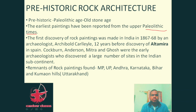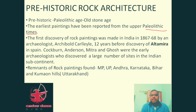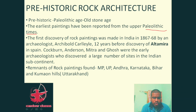An archaeologist named Archibald Carlyle found that rock paintings were available in India in 1867 to 1868 — 12 years before the discovery of Altamira in Spain, which was discovered in 1880. Cockburn, Anderson, Mitra, and Ghosh were also early archaeologists who discovered a large number of sites in the Indian subcontinent.